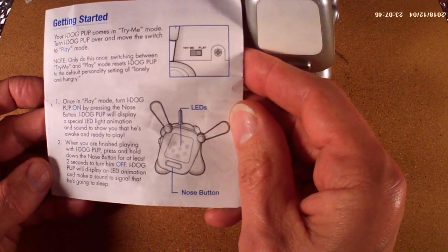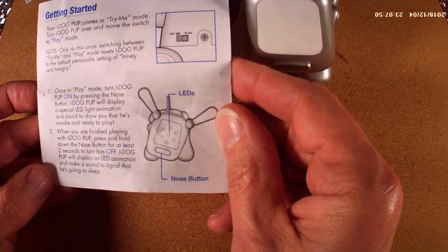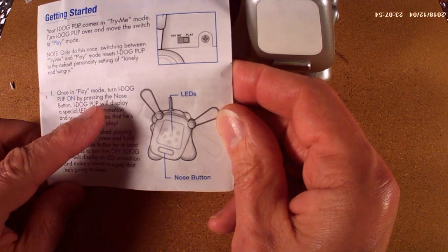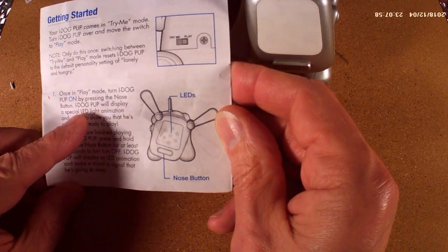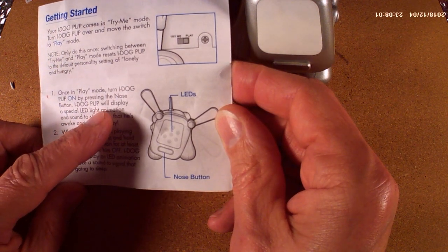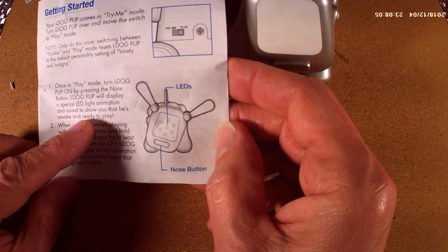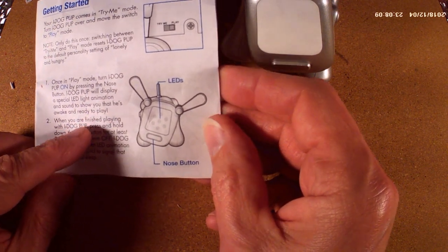Well, I've probably already done that a few times. Once in play mode, turn an eye dog pup on by pressing the nose. Display a special LED light animation and sound to show you he's awake and ready to play.